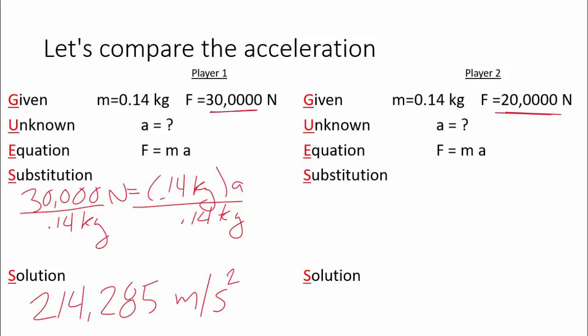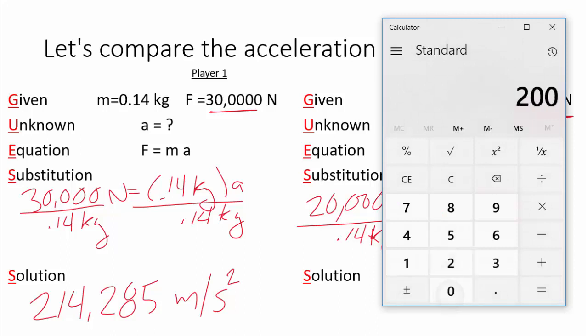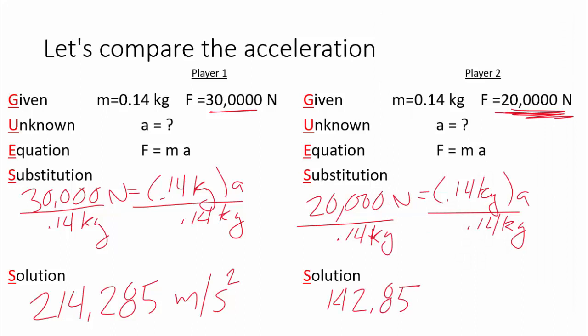Now if I look at the player hitting with 20,000 newtons, it would be the exact same calculation. 20,000 newtons equals 0.14 kilograms times A. Divide both sides by 0.14 kilograms. You get 142,857 meters per second squared. So we just proved with the math that this works, that if you use less force, if you don't hit the ball as hard, it's not going to go as far. And we knew that, but we just proved it with the math.